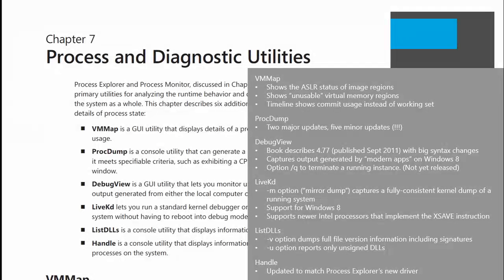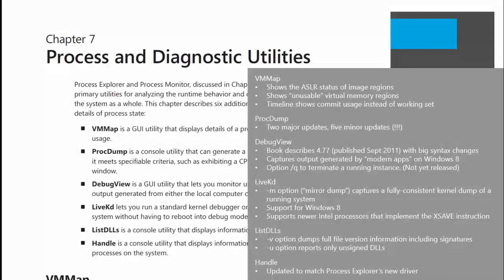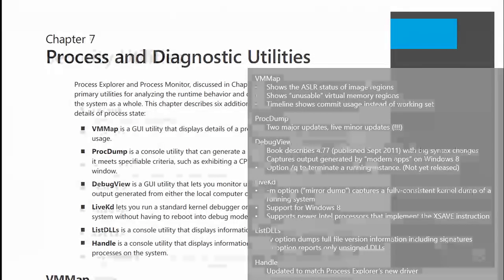Running low on time. ListDLL: the new '-v' option allows you to see much more verbose information about the DLLs loaded in the process. The '-u' option is very valuable — it will show you only the DLLs in the target process that are not signed, where the DLL images are not signed. It's a good way to look for malware. Handle has gained zero new features, but it uses the exact same kernel-mode driver as Process Explorer, so whenever that driver gets updated, you need the new version of Handle as well — otherwise you'll have conflicting drivers in memory.